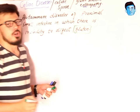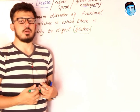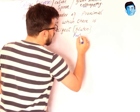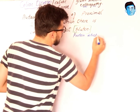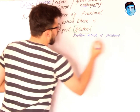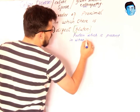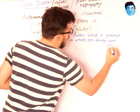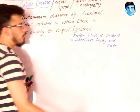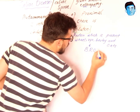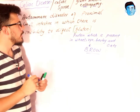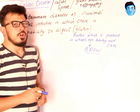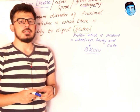First we should understand what gluten is. Gluten is a protein present in wheat, rye, barley, and oats. To easily remember this, we have a mnemonic: BROW — B stands for barley, R stands for rye, O stands for oats, and W stands for wheat.